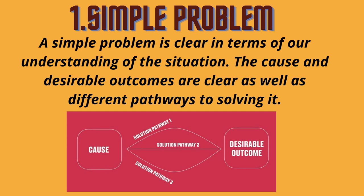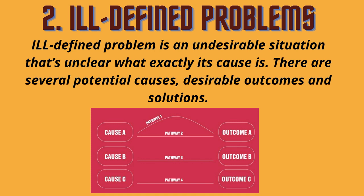The desirable outcome is when you can regularly broadcast your messages to your community. The second one is an ill-defined problem. An ill-defined problem is an undesirable situation where it's unclear what exactly its causes are — there are several potential causes, desirable outcomes and solutions. For example, the number of orders has increasingly decreased in the past few months. We realize the traffic to the online shop has decreased drastically as well. We might think of launching an aggressive marketing campaign, however the cause of the decrease in traffic may be seasonal or temporal. By looking further into the analytics, we realize the bounce rate of the online shop is extremely high and only 0.5% of those who don't bounce make a purchase. Poor UX of the online shop may be another candidate for the cause of the problem.